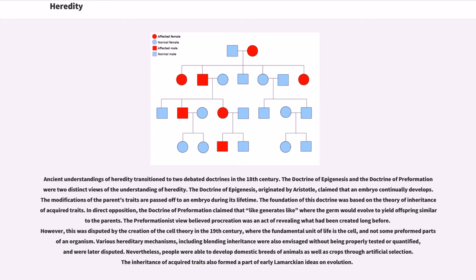Various hereditary mechanisms, including blending inheritance, were also envisaged without being properly tested or quantified and were later disputed. Nevertheless, people were able to develop domestic breeds of animals as well as crops through artificial selection. The inheritance of acquired traits also formed a part of early Lamarckian ideas on evolution.